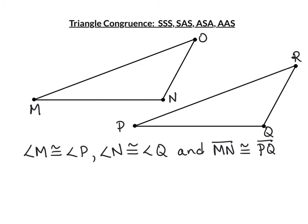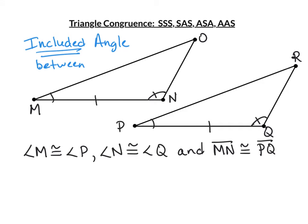The next technique is Angle-Side-Angle. Again, the order is very important. Given that angle P is congruent to angle M, angle N is congruent to angle Q, and MN is congruent to PQ — notice how the side is between the two angles. This is required. The side is included, meaning between the two angles. If the side is not between the two angles, you don't have Angle-Side-Angle. It must be in the same corresponding order in both triangles.